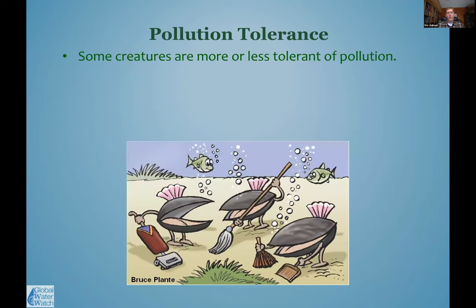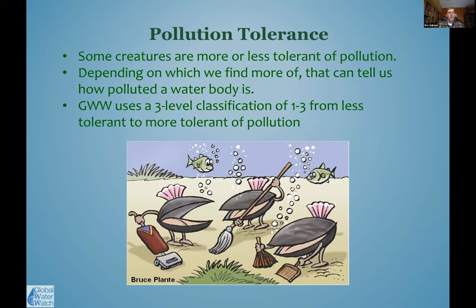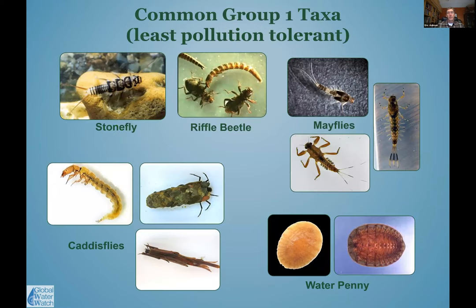Pollution tolerance is what we use to indicate water quality for our index. The Global Water Watch stream biomonitoring method uses a three-level classification: Group 1 is least pollution tolerant, Group 2 is intermediate, and Group 3 is most pollution tolerant. Some systems use four levels, but we use three. Common Group 1 organisms include stoneflies, mayflies, certain caddisflies, and water pennies — finding a lot of these indicates better water quality.